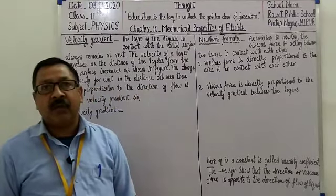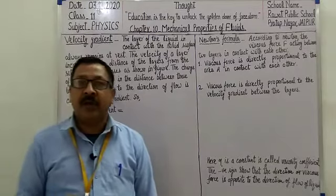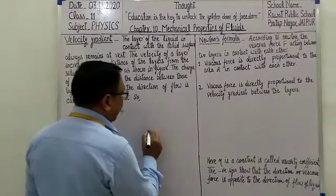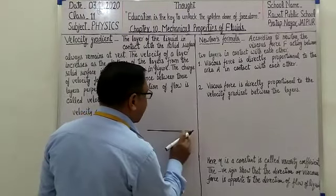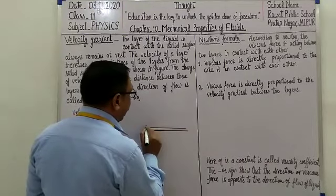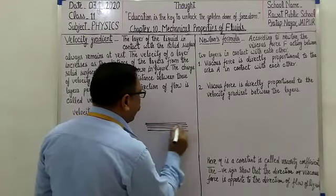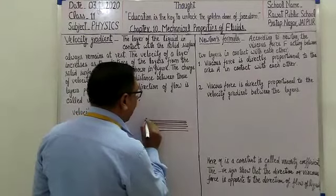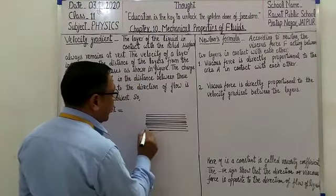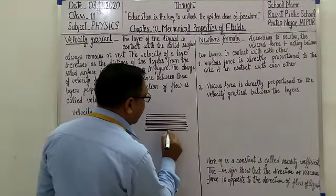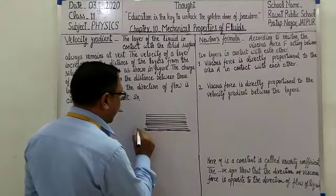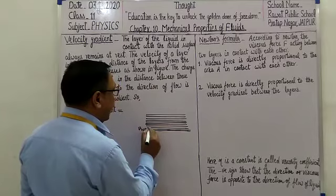जो layer चल रही है उसकी velocity बहुत minor होगी, approximately उसे हम zero consider कर सकते हैं। जैसे for example, हमारी ये एक surface है और इस पर कई layer के form में liquid का flow हो रहा है। Liquid हो या gases हो, उसका flow always layer के form में होता है। तो यहाँ पर जो layer सबसे नीचे है, यानि surface के contact में है, उसकी velocity approximately हम zero consider कर सकते हैं।